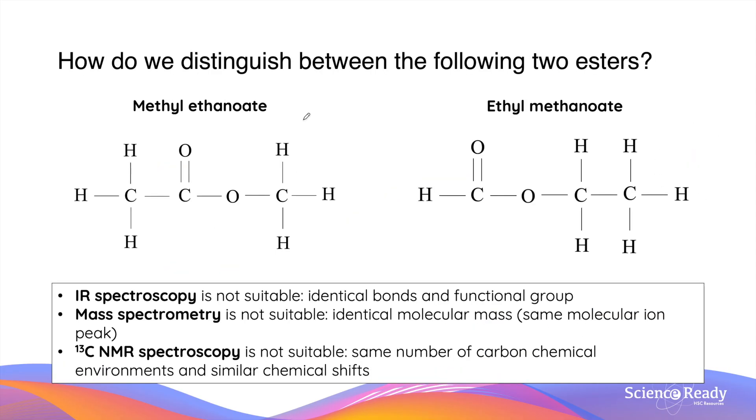Now I want to use an example to show you why proton NMR is a very powerful technique. Here we've got two examples of ester molecules, methyl ethanoate and ethyl methanoate. If we use infrared spectroscopy, it is very difficult to tell apart these two compounds because they have identical bonds and exactly the same functional group.